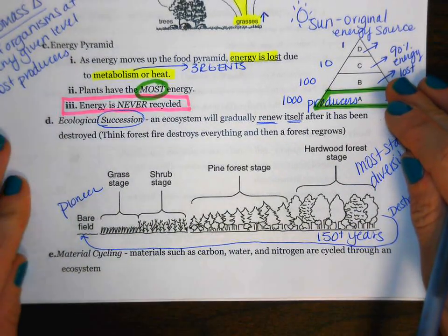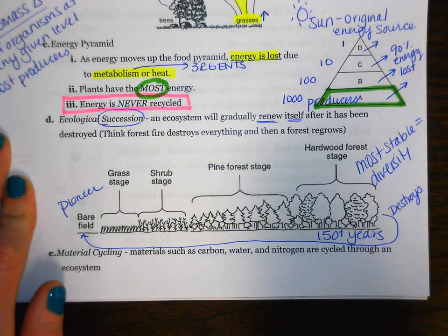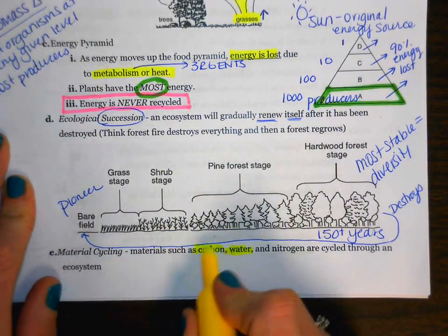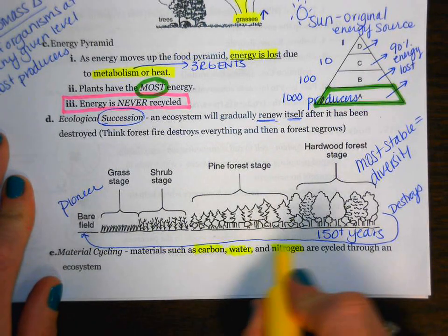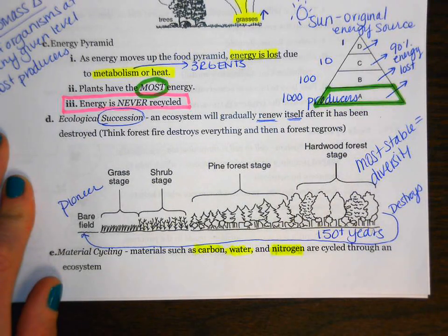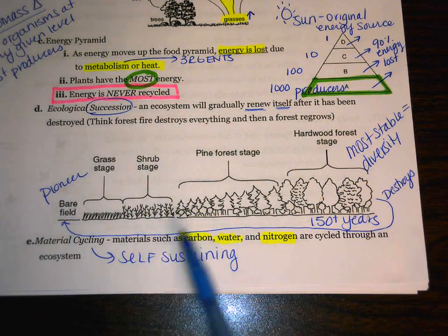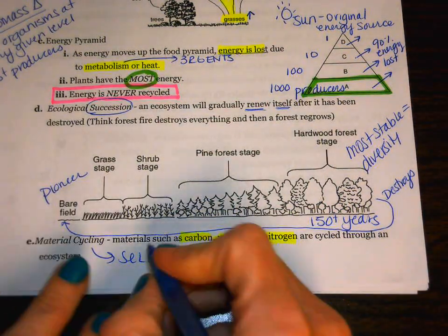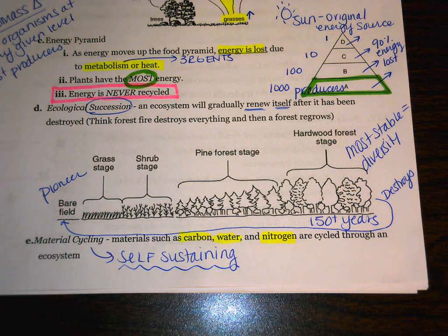Our last idea is material cycling — when things such as water, carbon, and nitrogen are able to be cycled through an ecosystem. We already covered carbon through respiration and photosynthesis, and nitrogen through decomposers and bacteria. This is really important because since those different elements are being cycled, we refer to the ecosystem as self-sustaining.